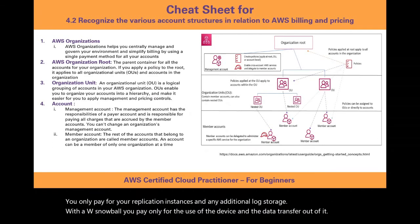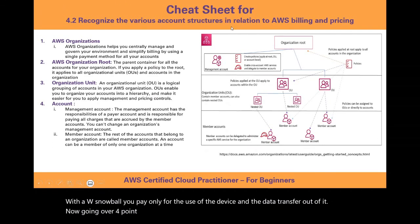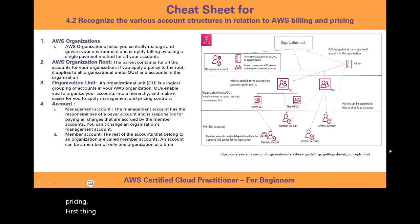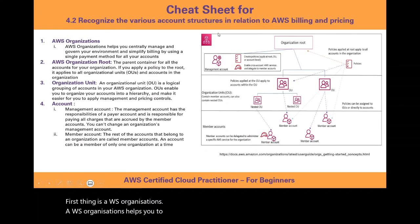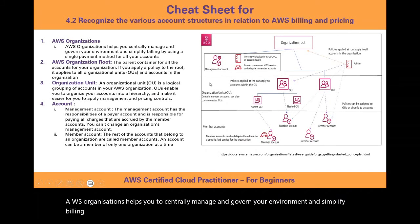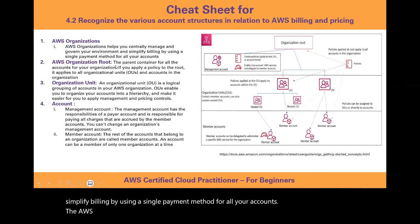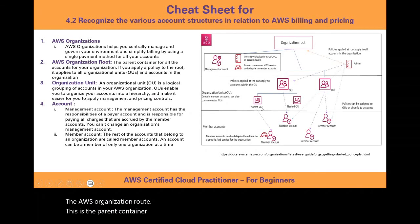Moving to 4.2: recognizing account structures in relation to AWS billing and pricing. AWS Organizations helps you centrally manage and govern your environment and simplifies billing by using a single payment method for all accounts. The AWS organization root is the parent container for all accounts in your organization — policies applied to the root apply to all organizational units and accounts.